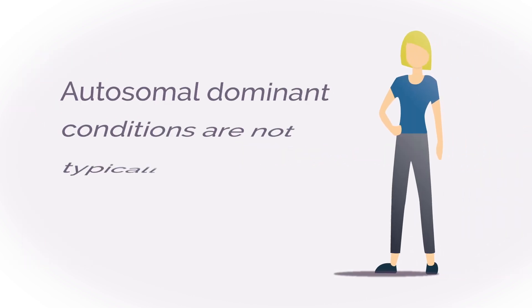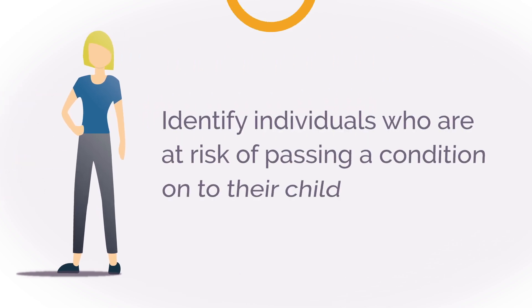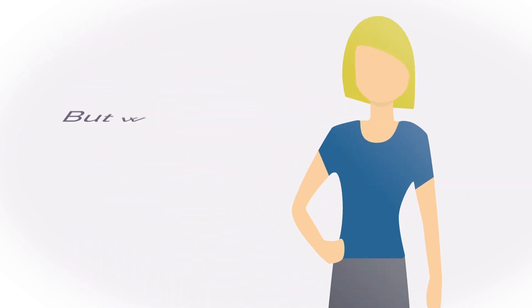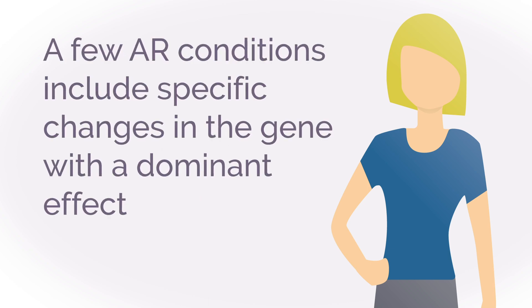Conditions inherited in an autosomal dominant manner are not typically included on carrier screening panels. The intent of carrier screening is to identify individuals who are at risk of passing a condition onto their child but who do not show symptoms of that condition. A few autosomal recessive conditions that are run for carrier screening purposes include specific changes in the gene that would have a dominant effect.